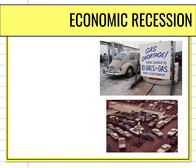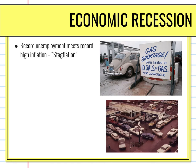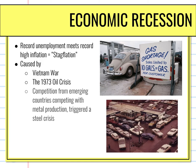During the 1970s, we were involved in an economic recession. We had record unemployment with high inflation, and that becomes known as stagflation. The primary causes of our economic recession in the 70s can be attributed to the Vietnam War, the 1973 oil crisis, competition from emerging countries that became industrialized and were now competing with metal production. This also triggered a crisis with steel.